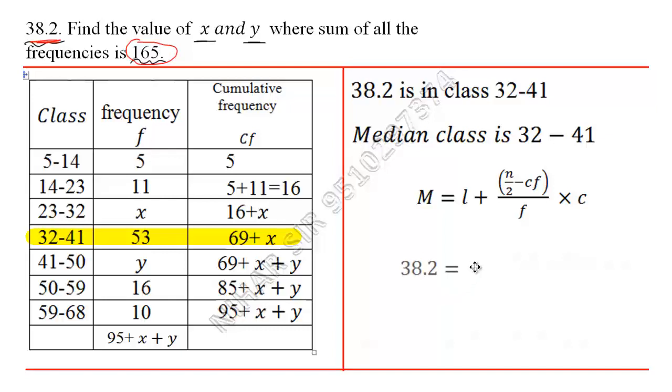Here lower limit is 32. n upon 2, that means 165 upon 2, which is 82.5 minus CF. CF is cumulative frequency of the class preceding median class. This class that I am going to highlight with the green color. CF of that class is 16 plus x.